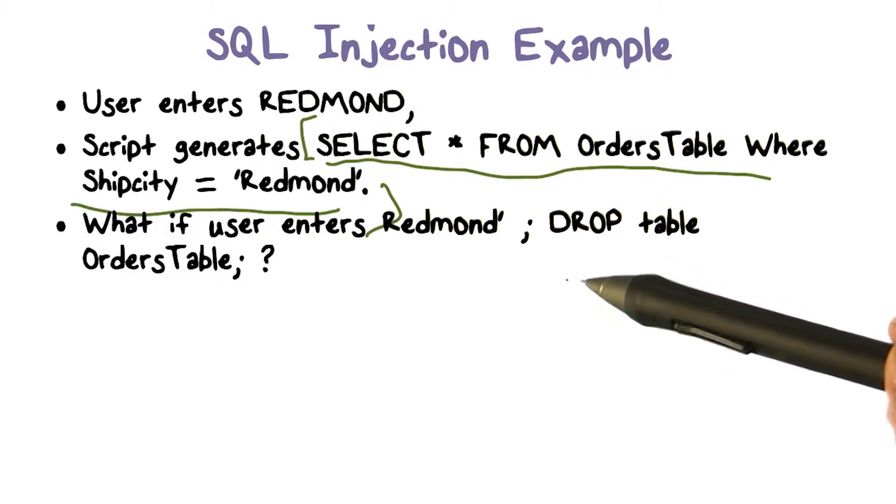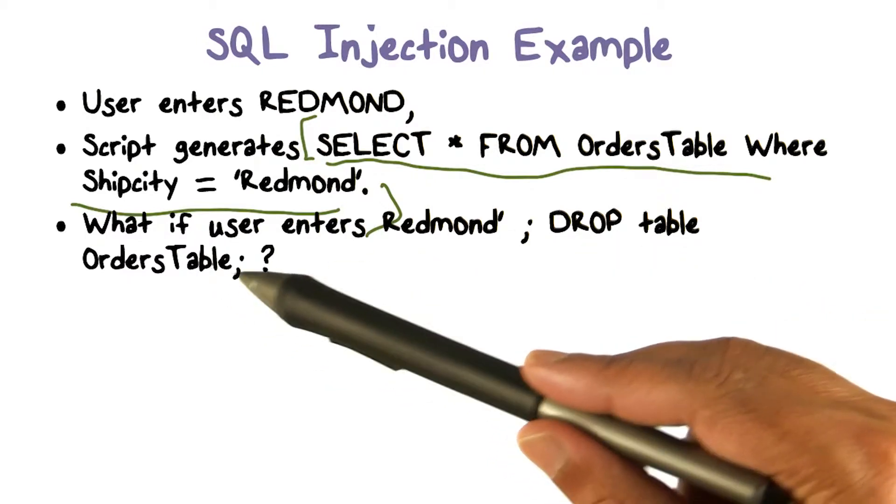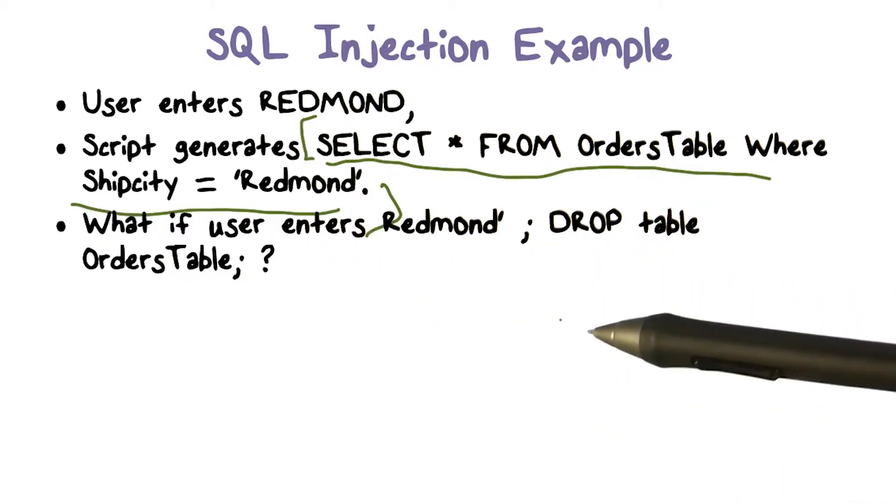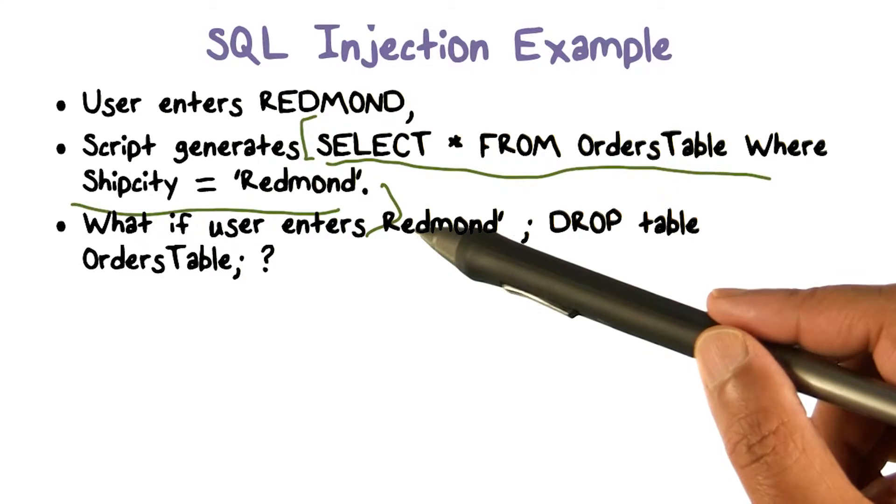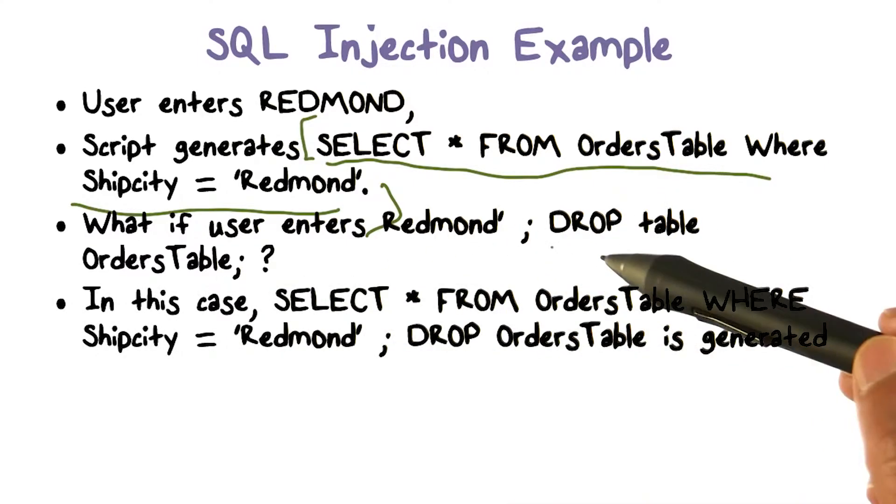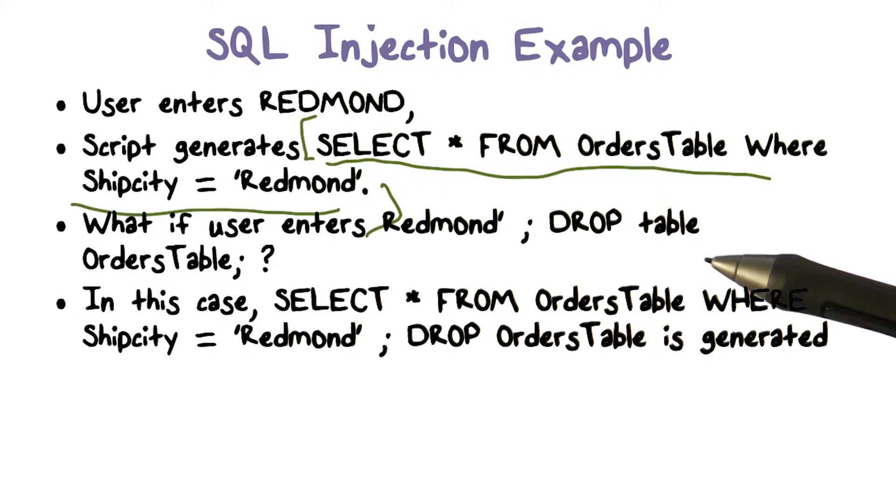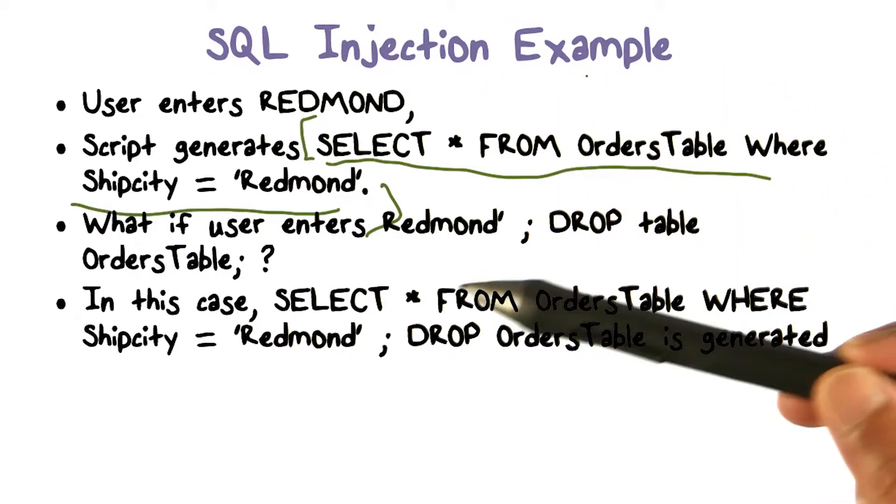So what happened here is that the user is actually entering a lot more input than what we expect, which is just a city name. So what happens when the user actually provides this as input? They're injecting this SQL injection that we're talking about. You'll see where the name now comes from. In this case,